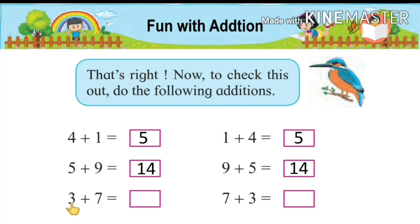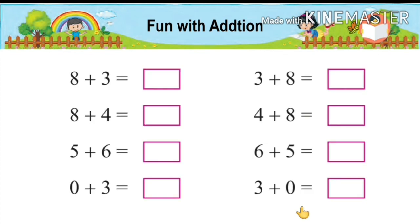Next example: 3 plus 7. The answer will become 10. Here we have 7 plus 3, and the answer will be the same: 10. Now look at these examples also. 8 plus 3 becomes 11, and 3 plus 8 also becomes the same: 11.